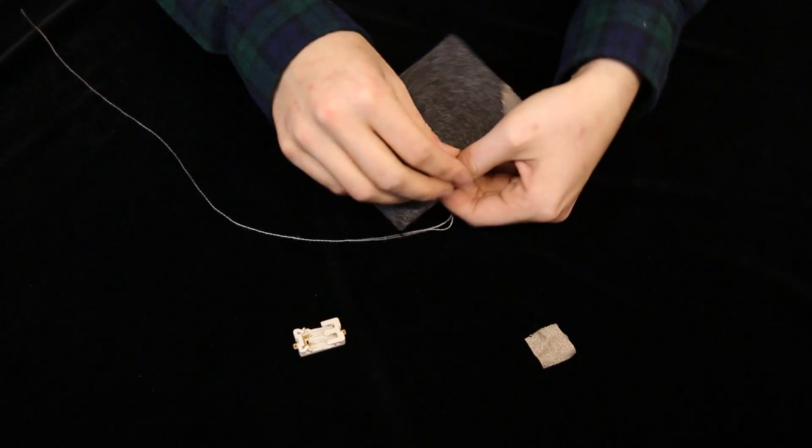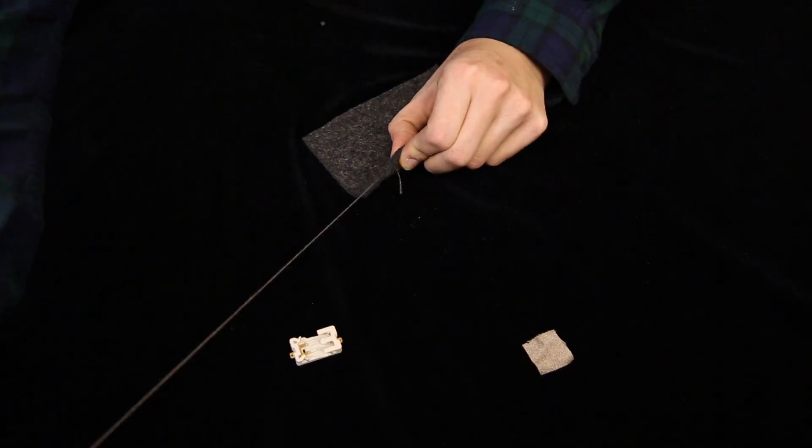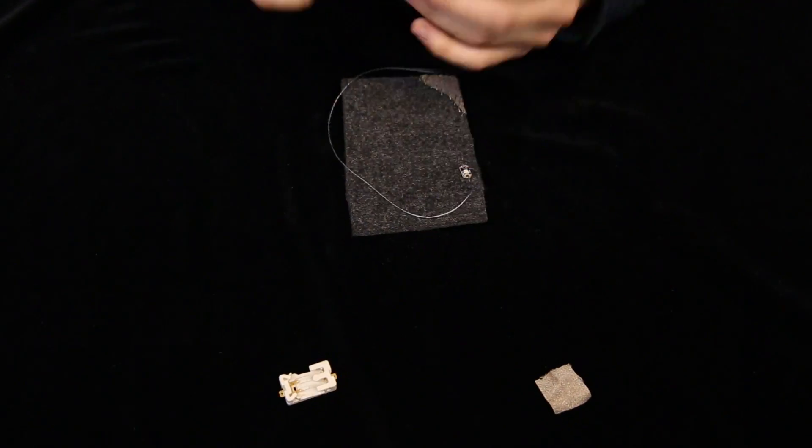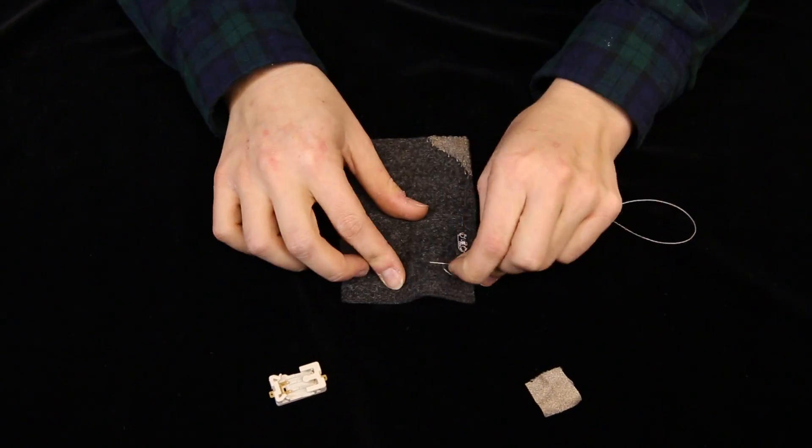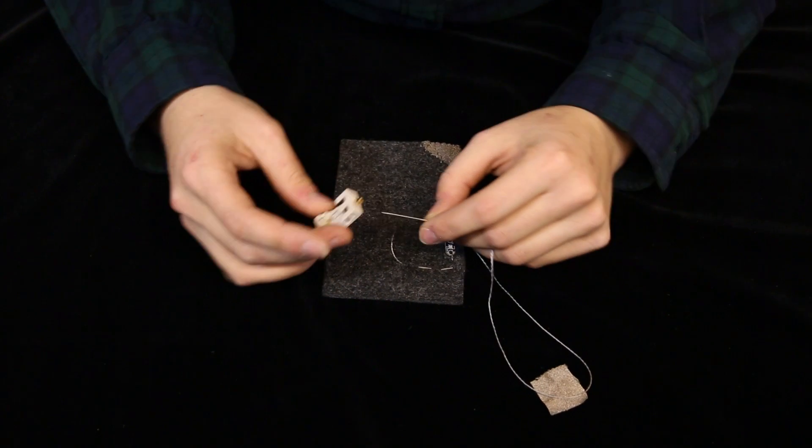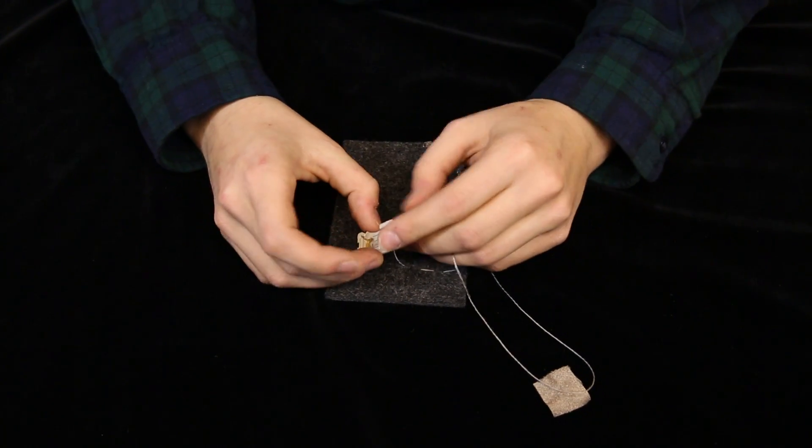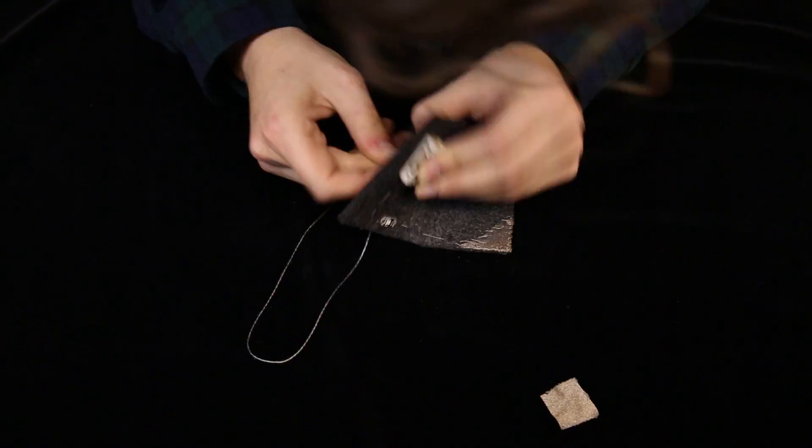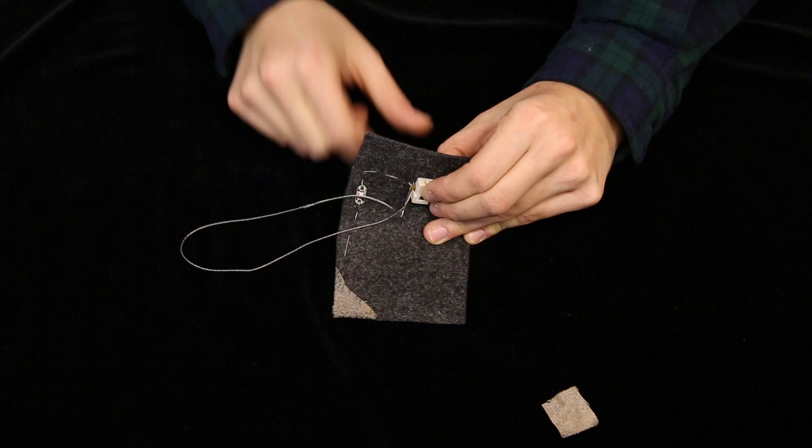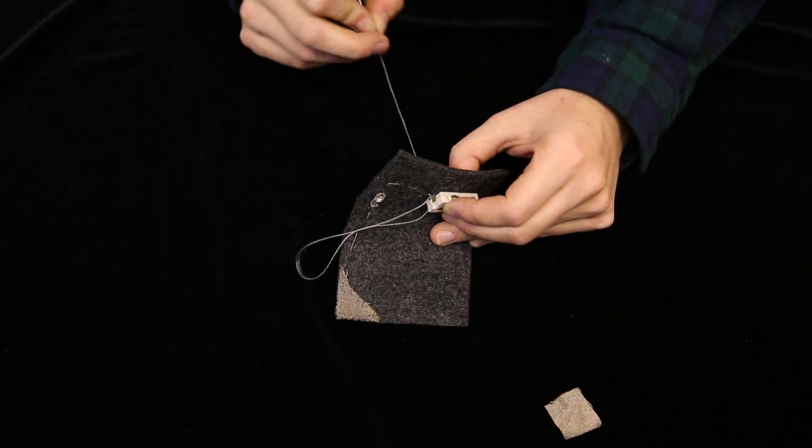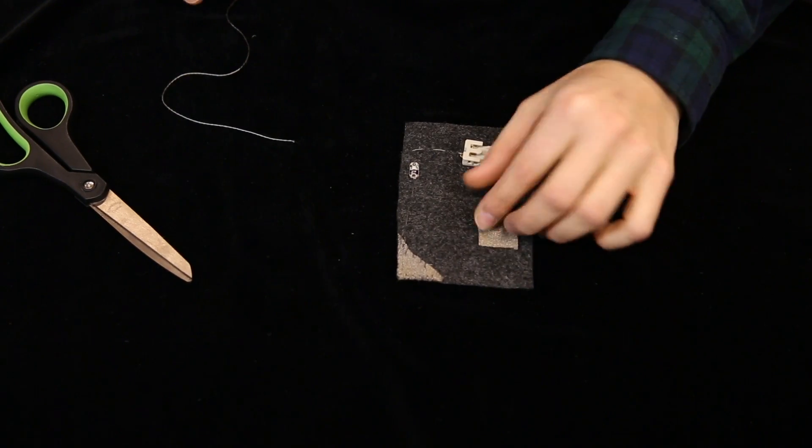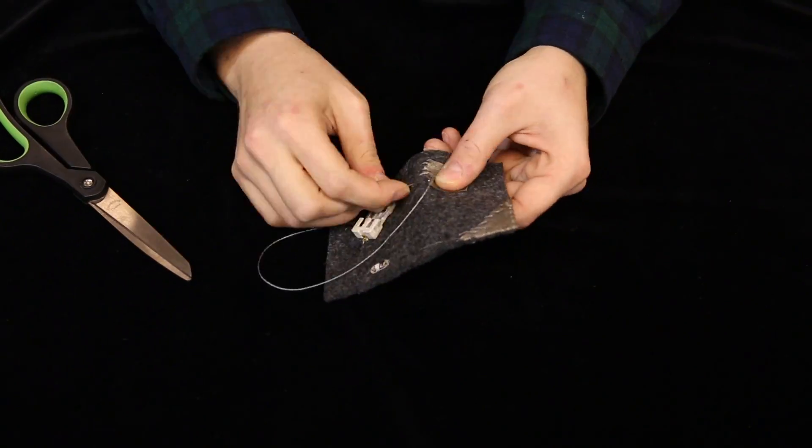Use the running stitch to connect the LED anode to the positive lead of the coin cell battery holder. Place the second patch of conductive fabric at least an inch away from the other and sew it down to the felt.